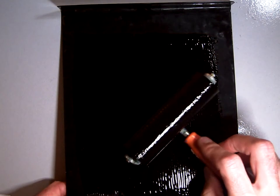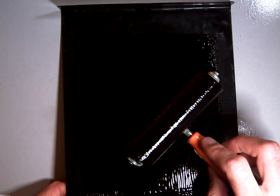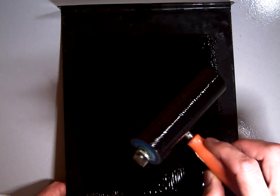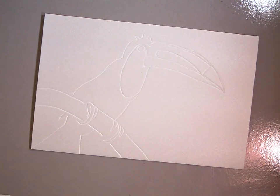Now my brayer, as you can see, is nice and fully inked all the way from side to side and all the way around. I am going to move my inking tray out of the way and pull my Intaglio print plate back. I will change my light here so you can actually see it.